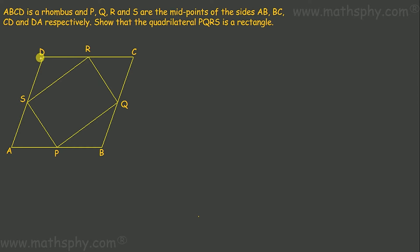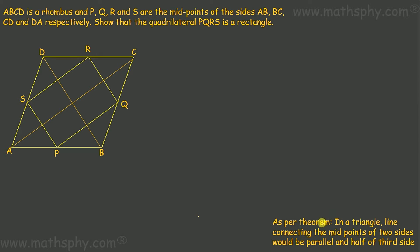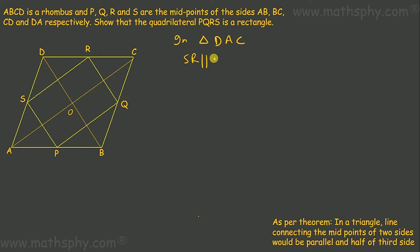To solve this question, what we first do is draw two diagonals AC and BD. The second step is we recall the theorem which says: in a triangle, the line connecting midpoints of two sides will be parallel to the third side and half of the third side as well. So in triangle DAC, SR is connecting midpoints of AD and CD, so SR would be parallel to AC.